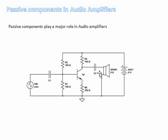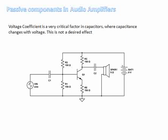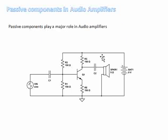This is a simple audio amplifier circuit built with a BJT and several passive components. We can see a clear dominance of passive components which play a very crucial role in audio amplification. There are resistors and capacitors which act as coupling caps between the speaker and the audio amplifier output.